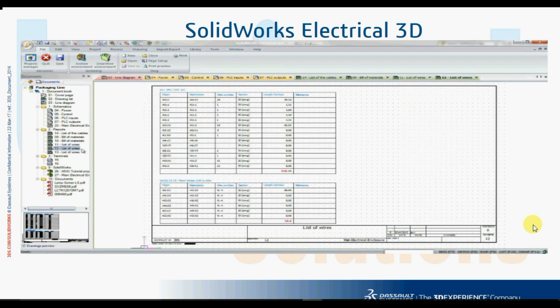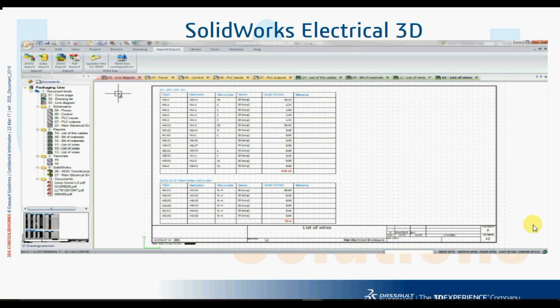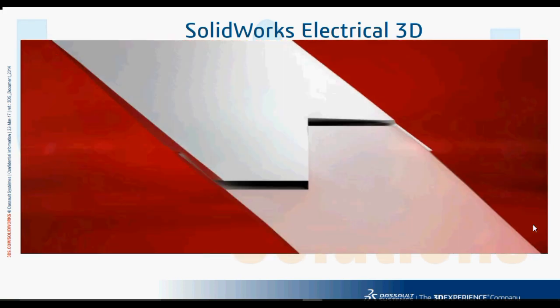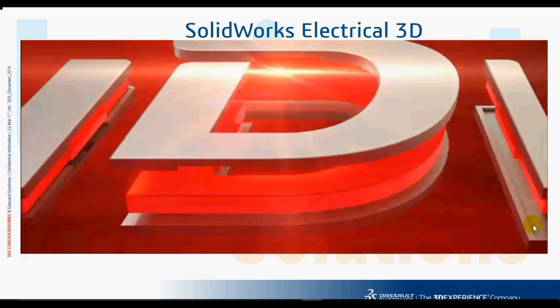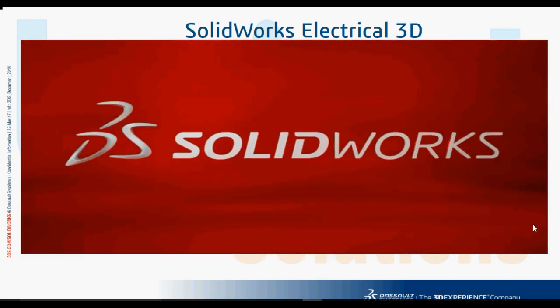Wire lengths calculated in SOLIDWORKS ELECTRICAL 3D are added to previously generated reports to complete your documentation. With one more click, you can export all the manufacturing information as a native DXF, DWG, or PDF file. SOLIDWORKS ELECTRICAL products offer unparalleled opportunities for enhancing collaboration between mechanical and electrical teams, reducing development times, and eliminating costly design errors.